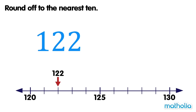Round off to the nearest ten. Let's round off one hundred and twenty-two to the nearest ten. When rounding to the nearest ten, we look at the digit in the ones place. The digit in the ones place is two.